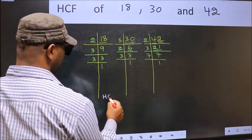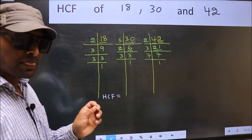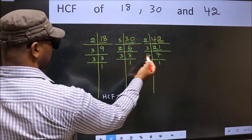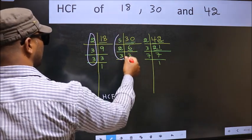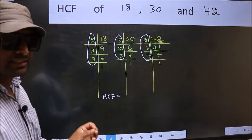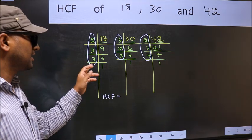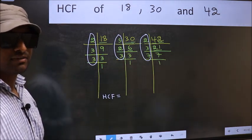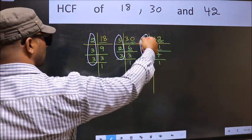Therefore our HCF is: the HCF is the product of numbers which should be present in all three factorizations. So now let us find the numbers which are present in all three places.